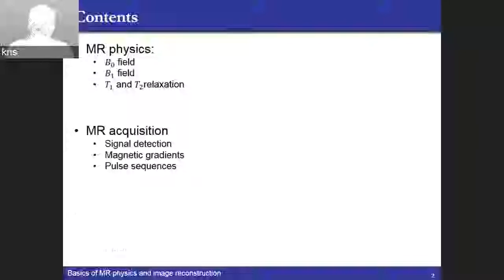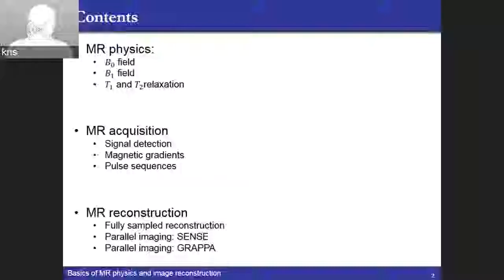First, we'll go through some of the MR physics: the magnetic fields involved in creating a signal for MR and the relaxations that go on during the MR experiments. How we actually measure a signal, how we spatially encode the signal, and what type of fields are going on inside the MR scanner. And then finally, a little bit on MR reconstruction — how we reconstruct the data, and two standard ways of accelerating this acquisition with parallel imaging. We'll talk a little bit about SENSE and GRAPPA, which are two very popular ways.